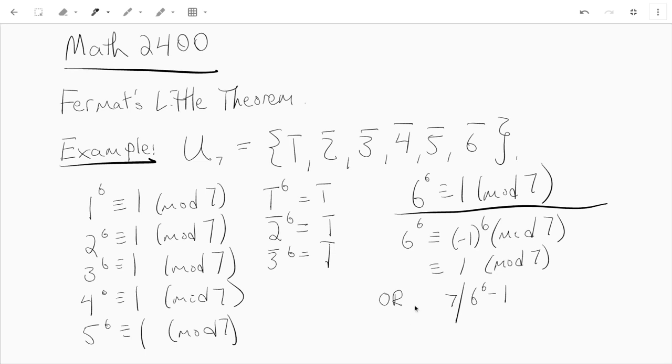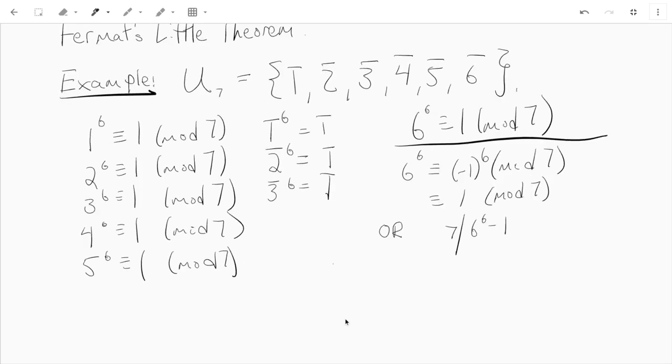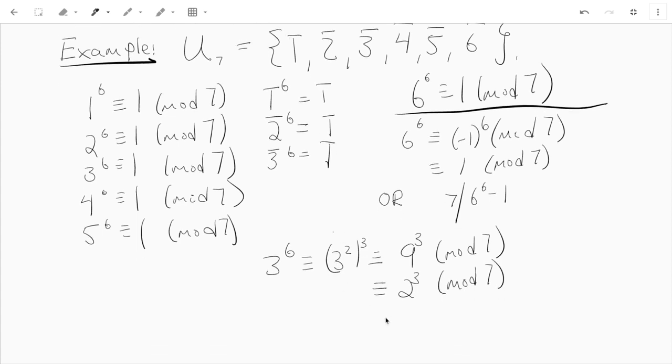Let's try 3 to the sixth, just as an example. 3⁶, well that's 3² cubed, that's just 9³ mod 7, but 9 is really congruent to 2. 2³ is 8, which is just 1 mod 7.